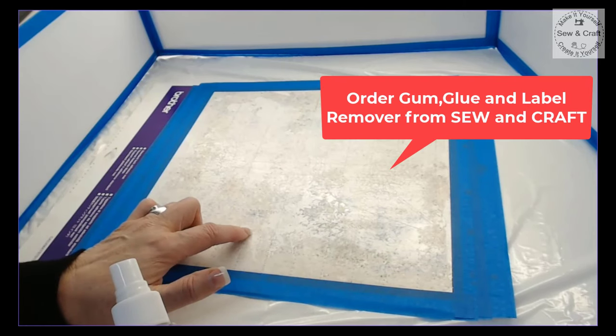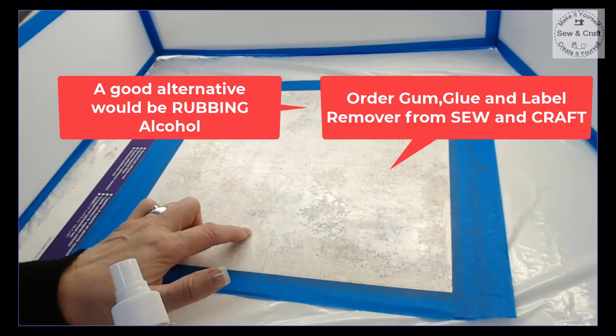You can order your gum glue and label remover from Sewn Craft, however there are some shipping restrictions. If you are not able to order because of those shipping restrictions then a good alternative for you would be to find a good quality rubbing alcohol. The rubbing alcohol may take a little bit longer to actually strip the glue off but it will strip the glue off without damaging your mat.